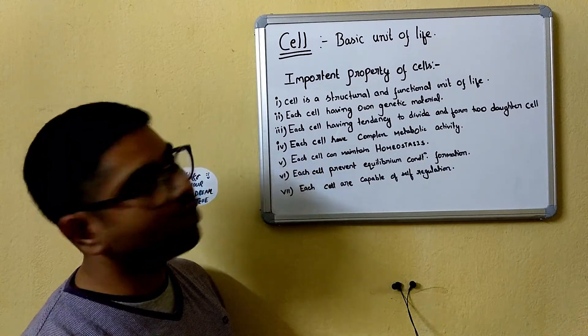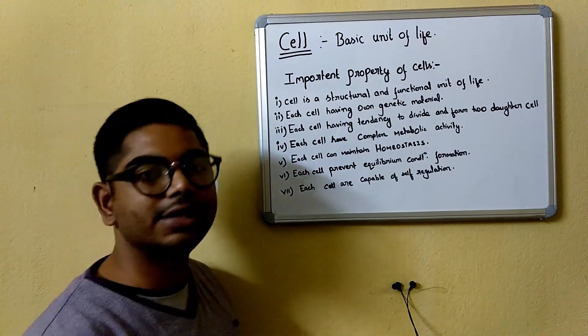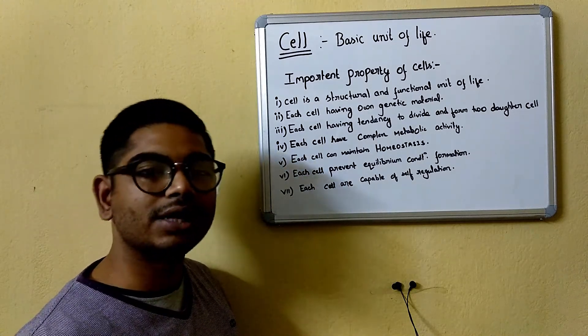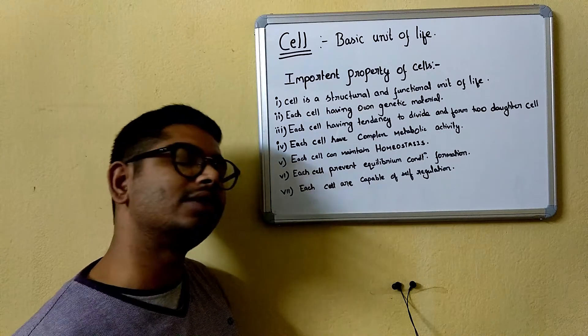Second, each cell has its own genetic material. What is genetic material? Genetic material is genetic information which is passed on to the next generation every time the cell divides.